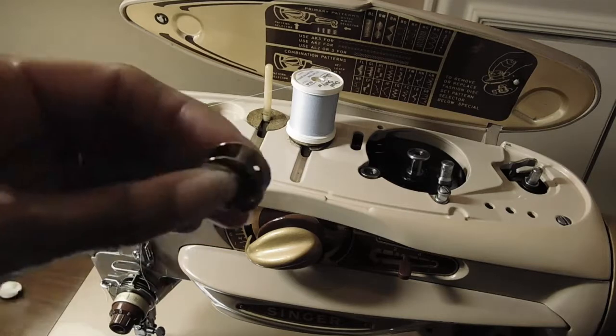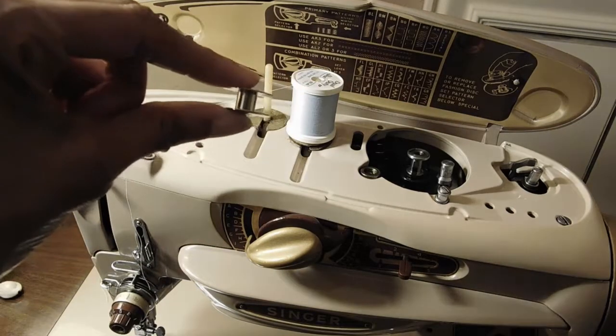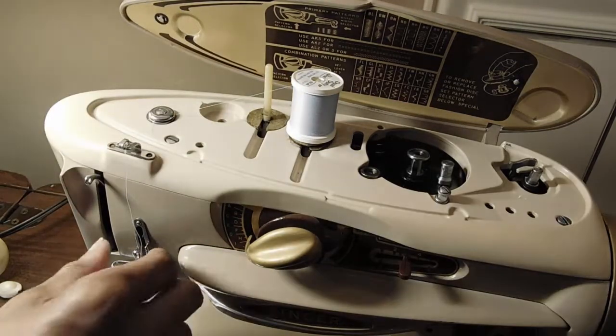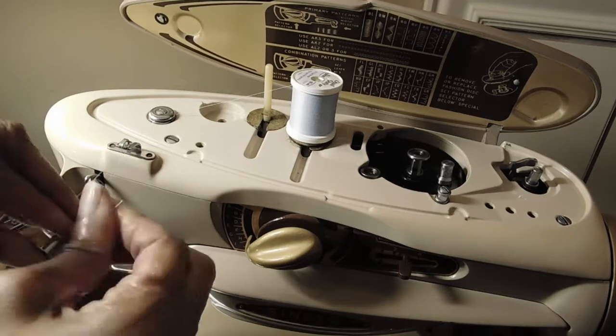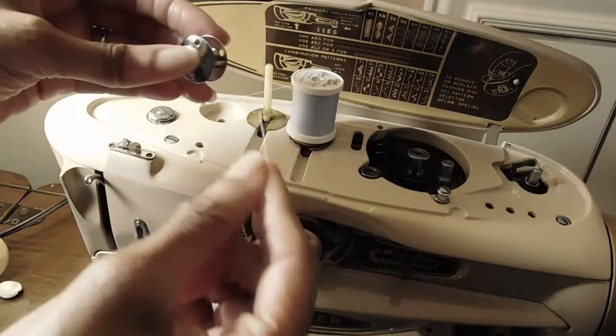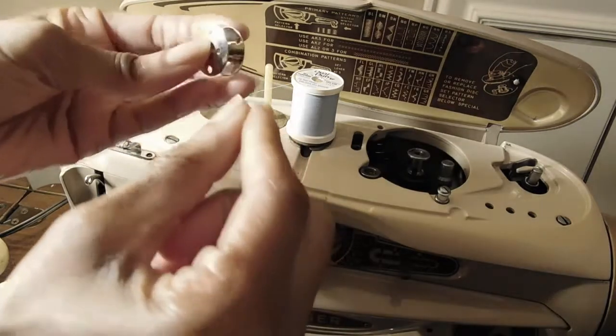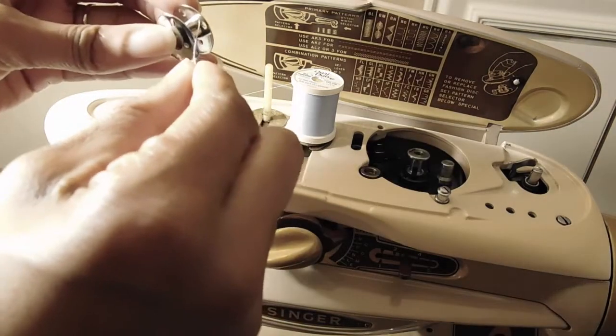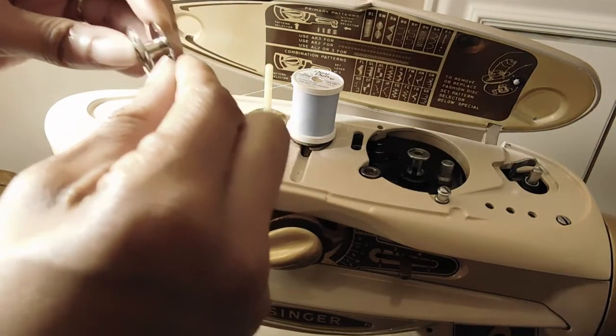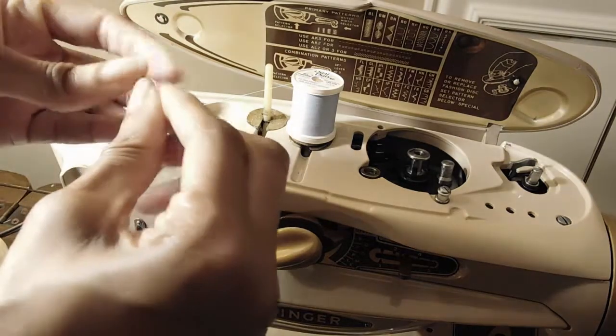Now I will get my bobbin. I'm using a class 66 metal bobbin. It has four holes. I will thread one of the four holes. Some people like to wrap. I prefer to place a thread through the hole.